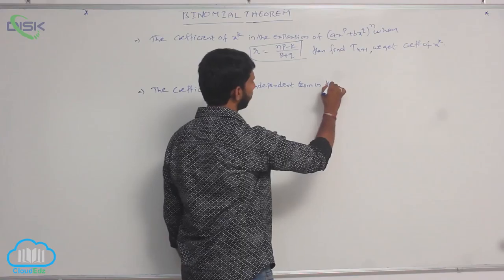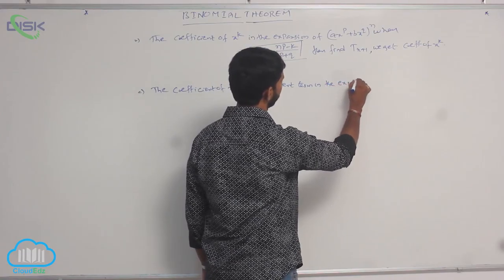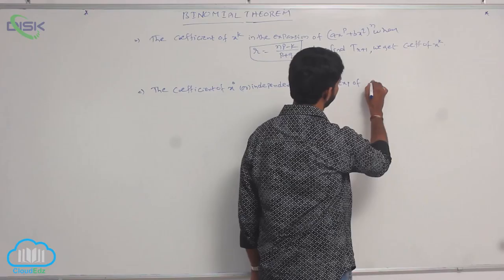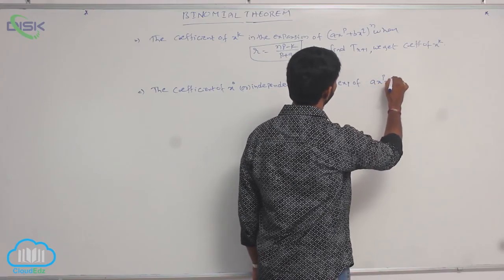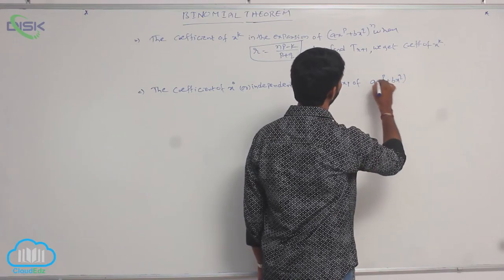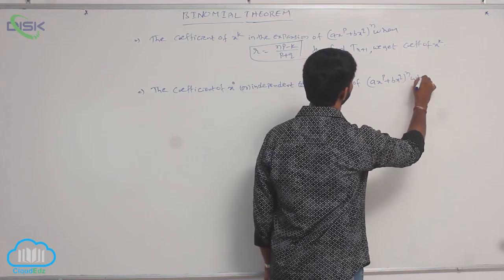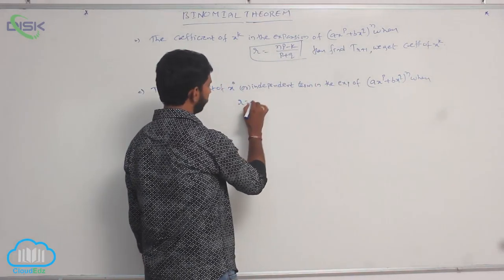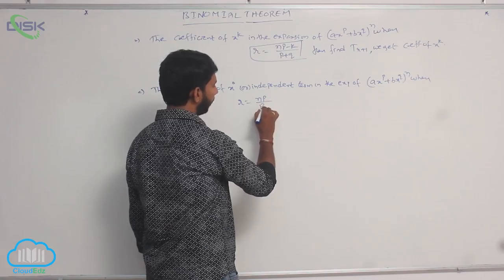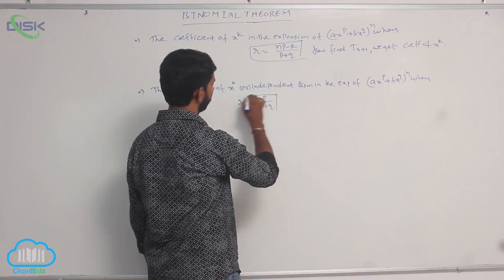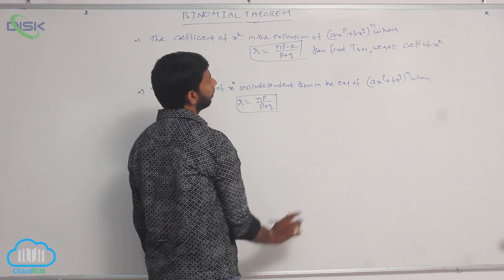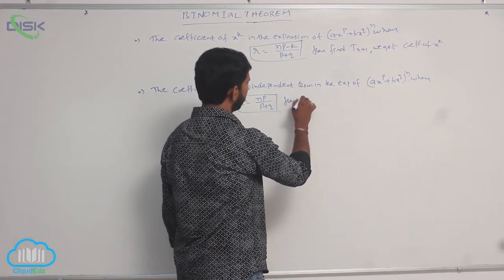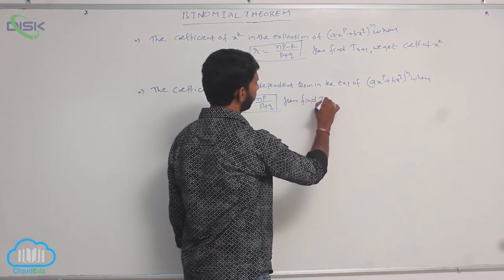In the expansion of (ax power p plus bx power q) whole power n, when r is equal to np divided by p plus q.